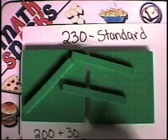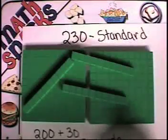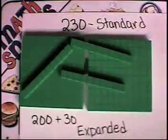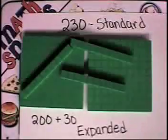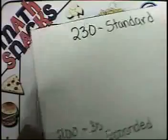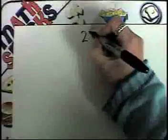Two hundred and thirty. This is written in standard. And what did we say this one was? Expanded. So today when I ask you to show me different numbers, we're going to ask you to write it both in standard and in expanded. Let's try another number.